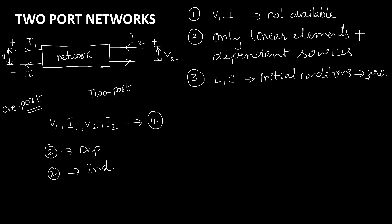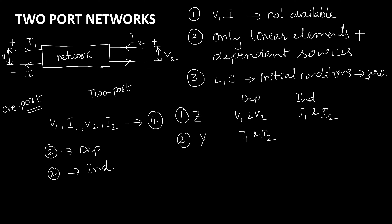For example, V1 and V2 can be dependent while I1 and I2 are independent. Based on different combinations, we can have types of two-port network parameters. The first one is Z parameters: V1 and V2 are the dependent variables, and I1 and I2 are the independent variables. The next one is Y parameters — it is the opposite case: I1 and I2 are the dependent variables, and V1 and V2 are the independent variables.